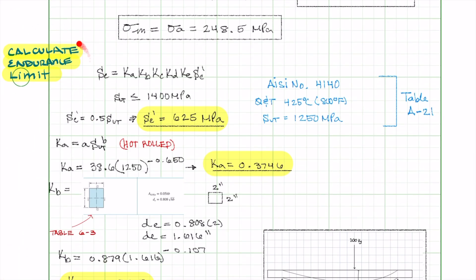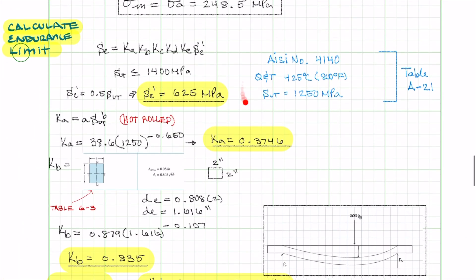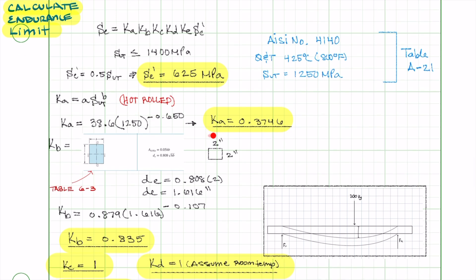Now we calculate endurance limit for AISI 4140 steel at 425 degrees. From table 8-21, the SUT is 1250 MPa, and SE prime is 625 MPa. Since the surface is hot rolled, KA is calculated as 0.3746, and the steel is rectangular in shape.